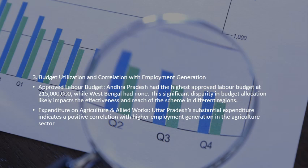On budget allocation correlation with employment generation: Uttar Pradesh has the highest approved labor budget while West Bengal has none, and significant disparities in budget allocation likely impact the effectiveness of the scheme in different regions. Expenditure on agriculture and allied works shows a positive correlation with higher employment generation.